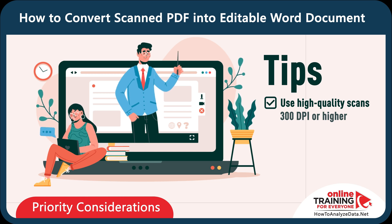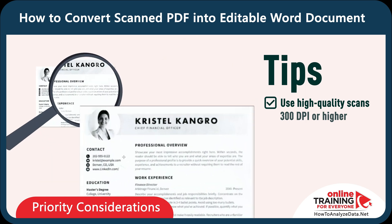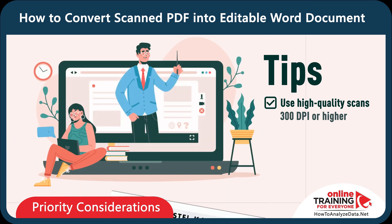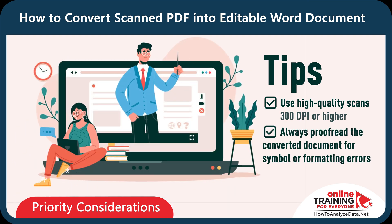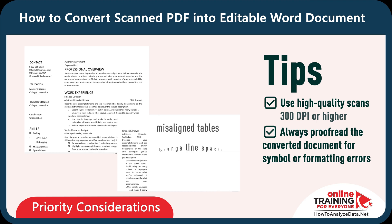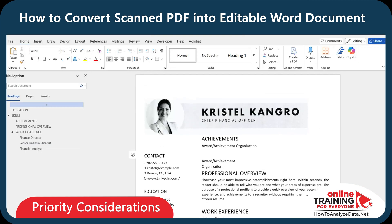Now let's cover some important tips to make sure the conversion goes smoothly. Number one: image quality affects accuracy. Low resolution scans, blurred pages, or handwriting may confuse the OCR engine. Aim for at least 300 DPI scans when possible. Another important consideration is that formatting might break — you may see misaligned tables, strange line spacing, or headers pushed into the body text. Word does the best conversion but it's not perfect, and this is exactly what we see in this document.